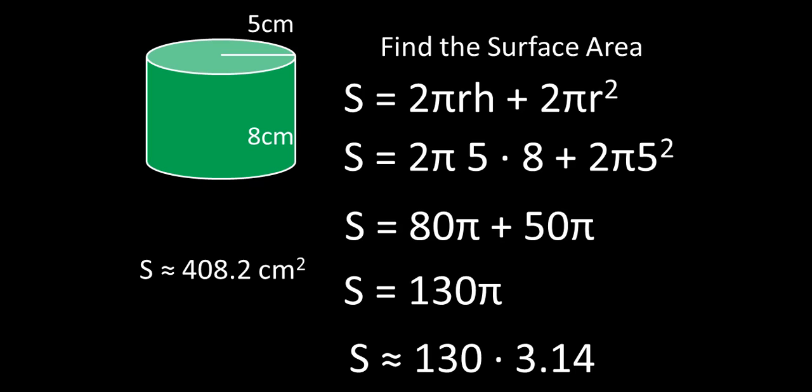That's the surface area of a cylinder. Again, that huge long explanation just to have a one minute question. But this is the equation and all the steps that you'll need to follow to be able to solve the surface area of a cylinder. The only thing that they might change up is they might give you the diameter instead of the radius. And if that's the case, diameter is twice as much as the radius.